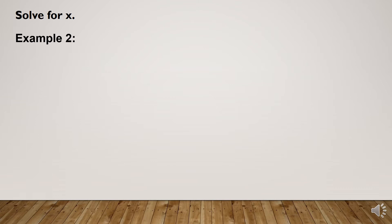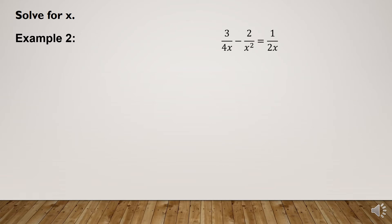Example number 2: The rational equation is 3/(4x) - 2/x² = 1/(2x). The denominators are 4x, x², and 2x. To find the LCD, we write the prime factors of each denominator. The prime factors of 4x are 2, 2, and x.